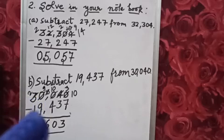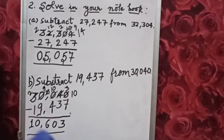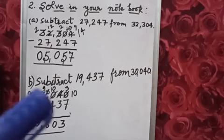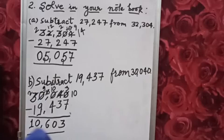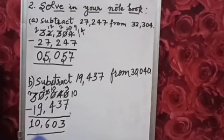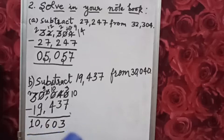So 2 minus 1 is 1. After subtraction you will get 10,603. Your answer is 10,603.